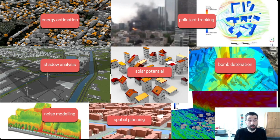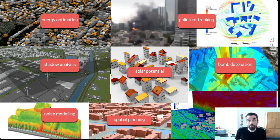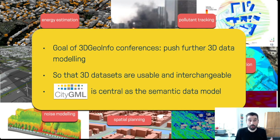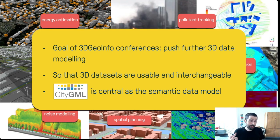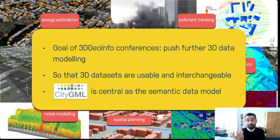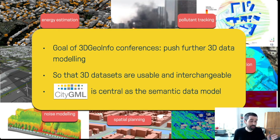The analysis and simulations we can do wouldn't be possible if we didn't have semantic 3D city models — if we only had 2D geo information or purely geometrical geo information. This slide summarizes well the goal of the series of 3D geo information conferences: to push further the 3D data modeling so that the datasets we're producing are usable, exchangeable, and convertible. Central to all this work for the last 15 years has been CityGML.